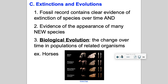The fossil record gives us clear evidence of extinctions of species over time and evidence of new species. We call this biological evolution — the change over time in populations of certain organisms. For example, horses were originally the size of a dog and had five toes on all four legs, living in jungle forests. As their environment changed from jungle to open plain, their number of toes reduced to one, they got larger in size, grew longer legs to run faster, and their molars became stronger and thicker to chew grass.